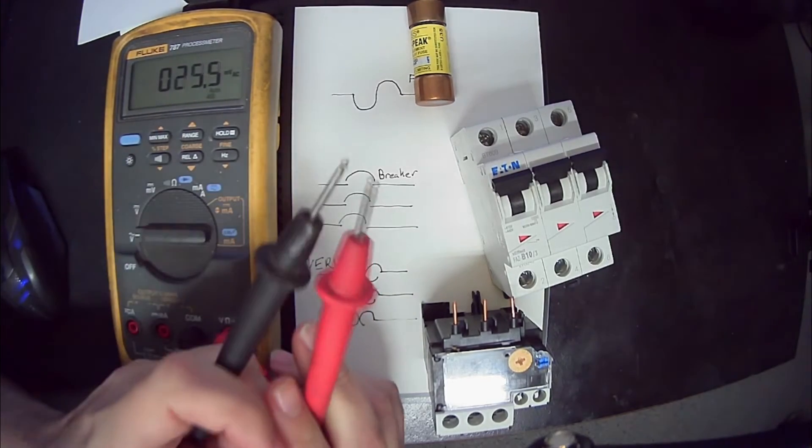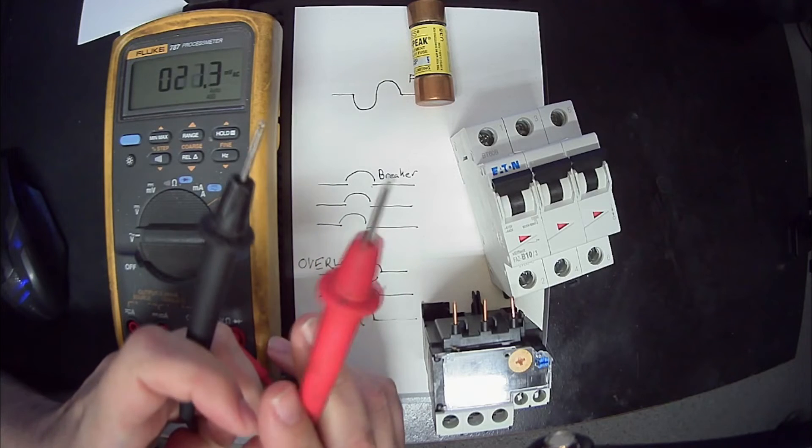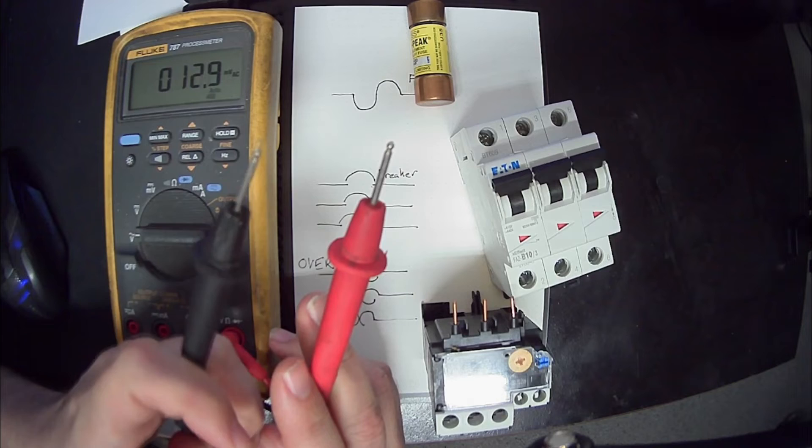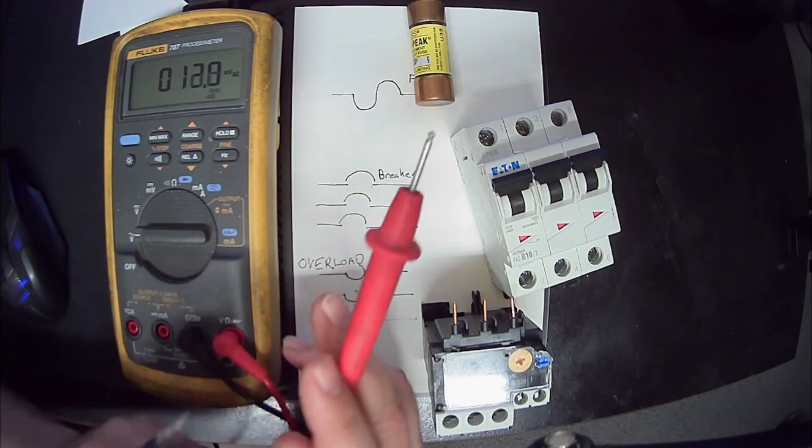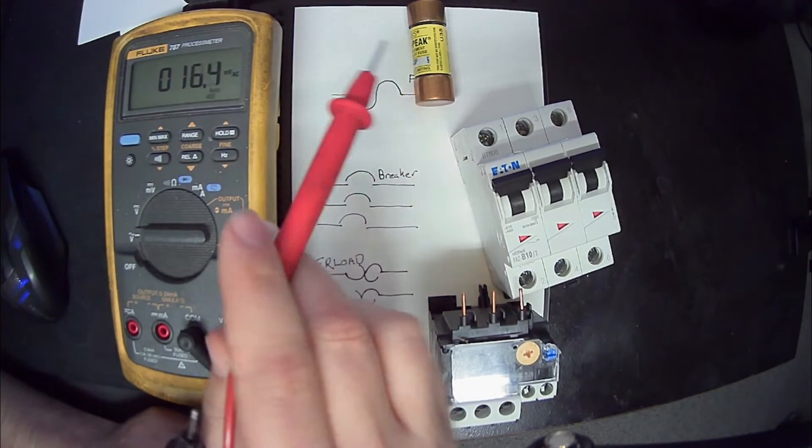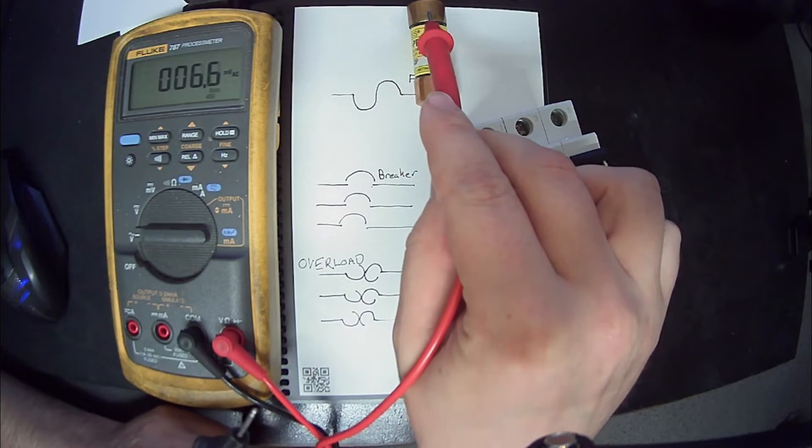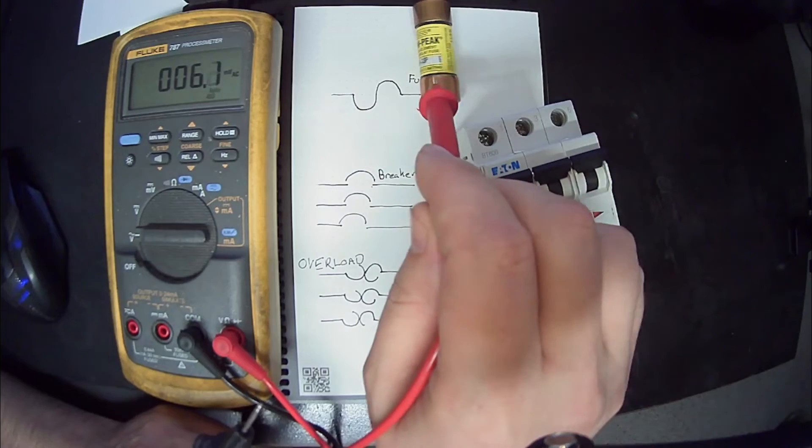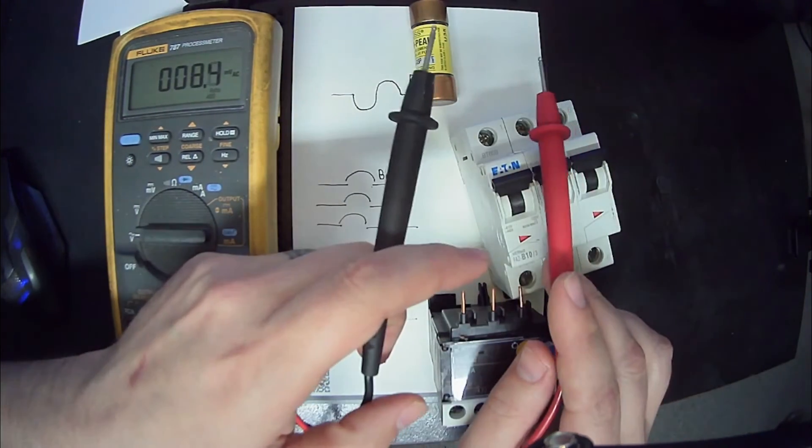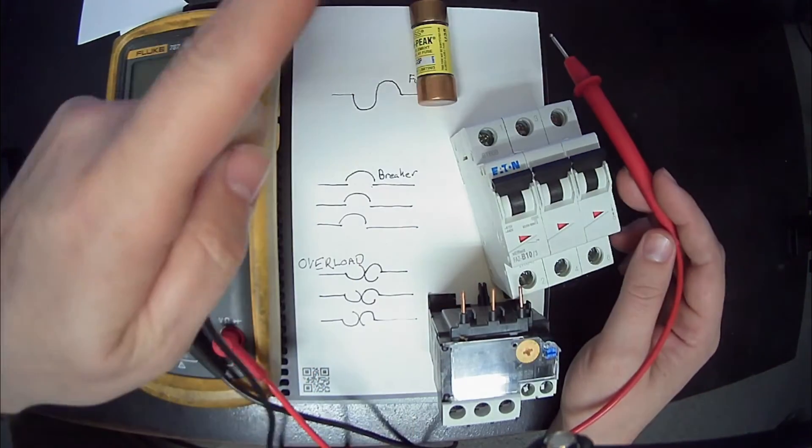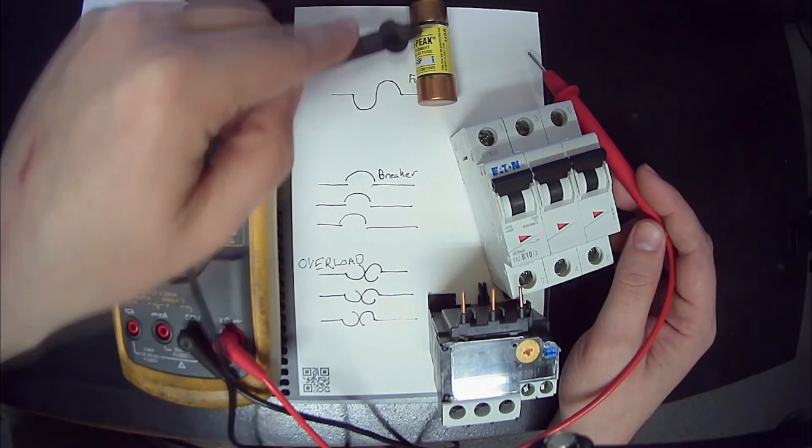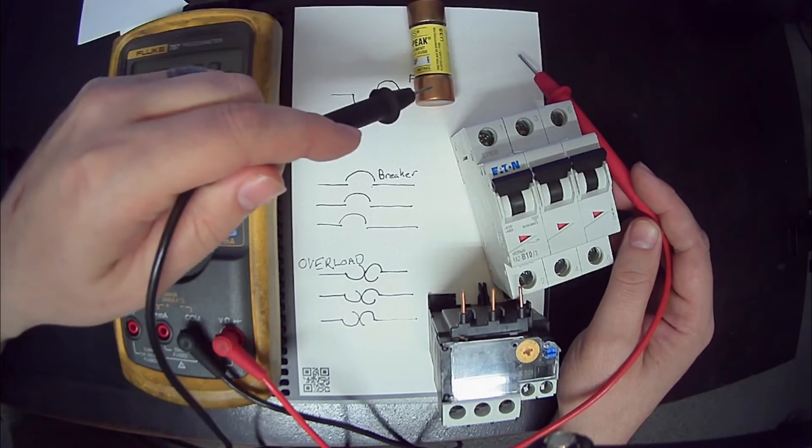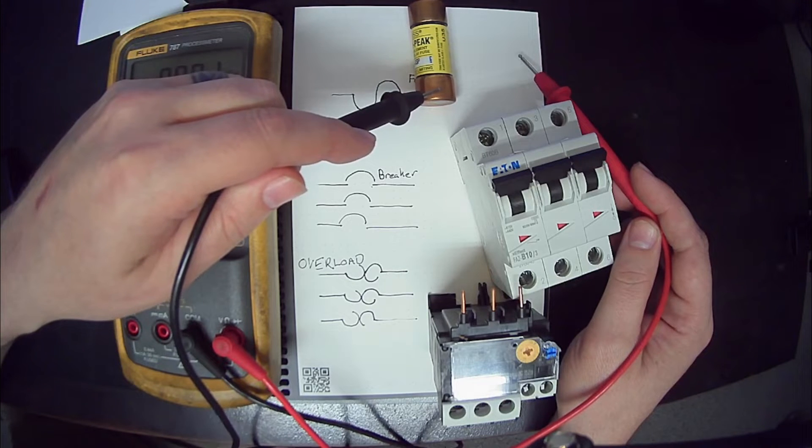With one meter lead, we're going to put it on reference and the other one on our test point, whatever it is that we're trying to test. If this fuse, for example, was being fed by a 120 volt system, then my reference is going to go on to neutral and I would just be testing this. I would look at the top and bottom and say okay, I've got 120 volts here and I've got 120 volts here. That would mean it's a good fuse.